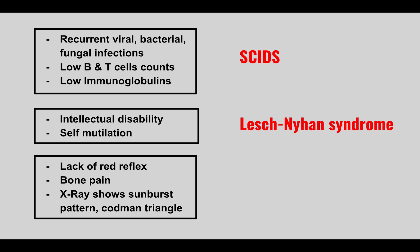The next condition: a patient will have lack of the red reflex, bone pain, and an X-ray showing a sunburst pattern and Codman triangle. This is due to an Rb gene mutation, presenting with retinoblastoma and osteosarcomas — that's why we see these symptoms.